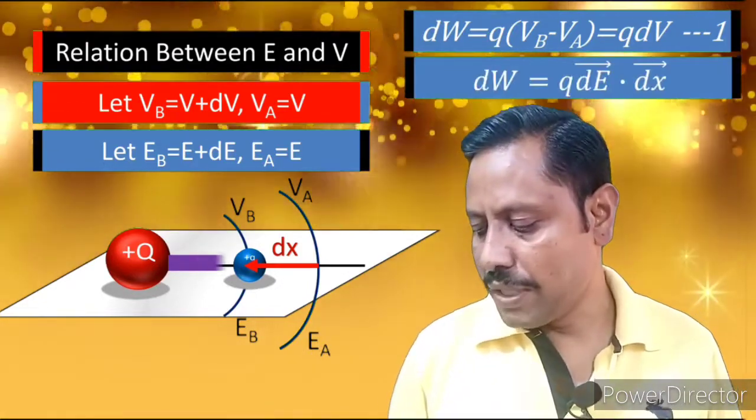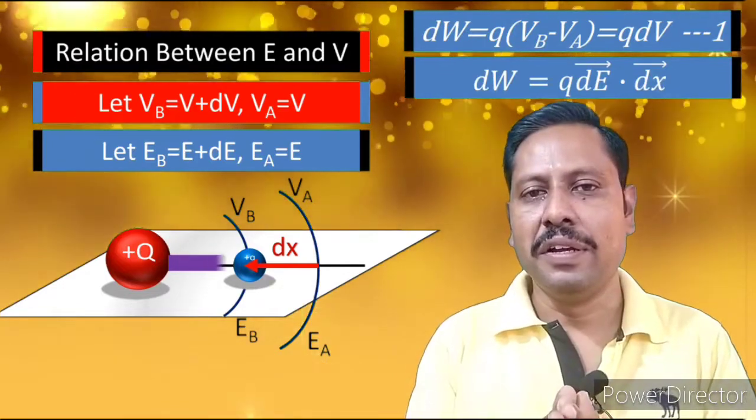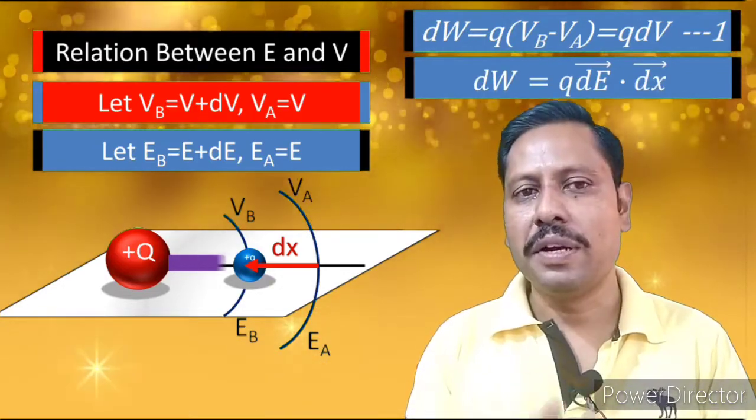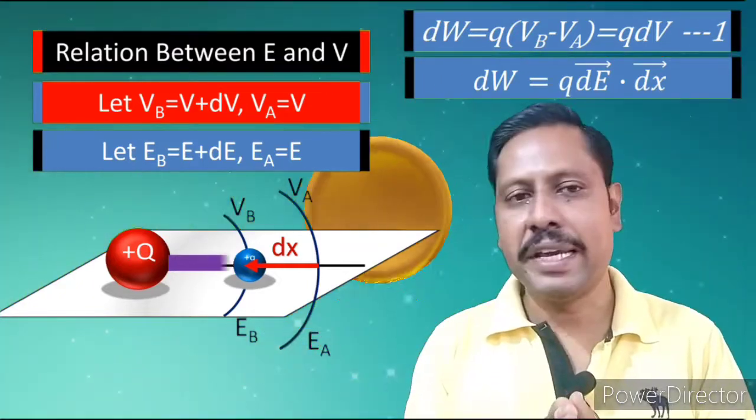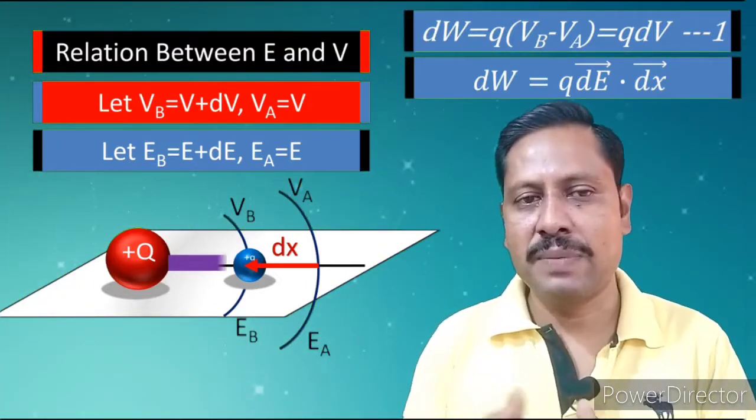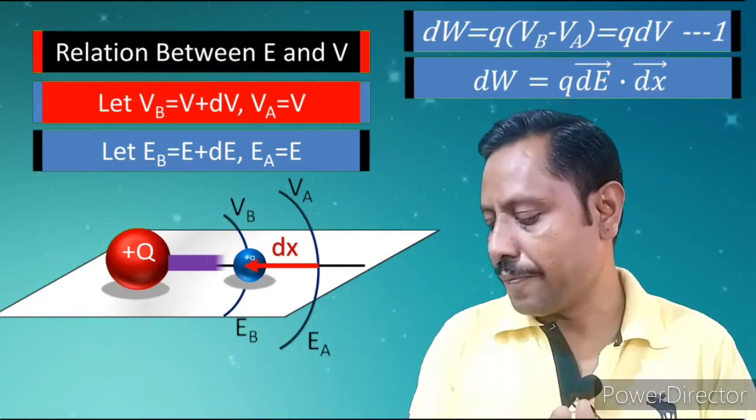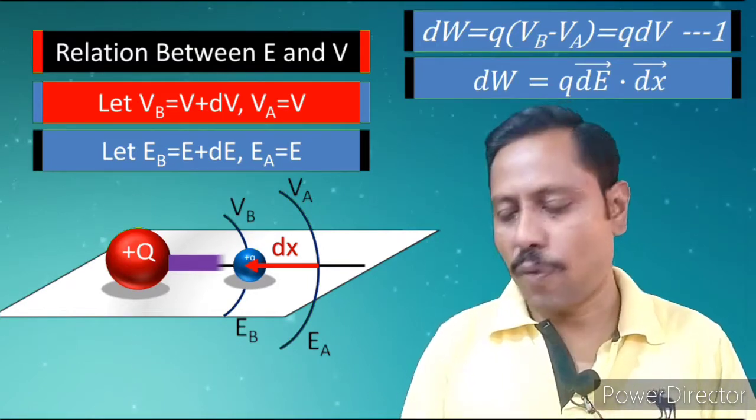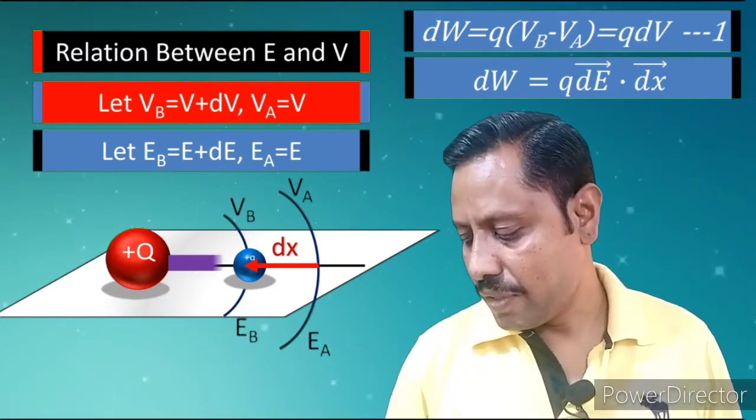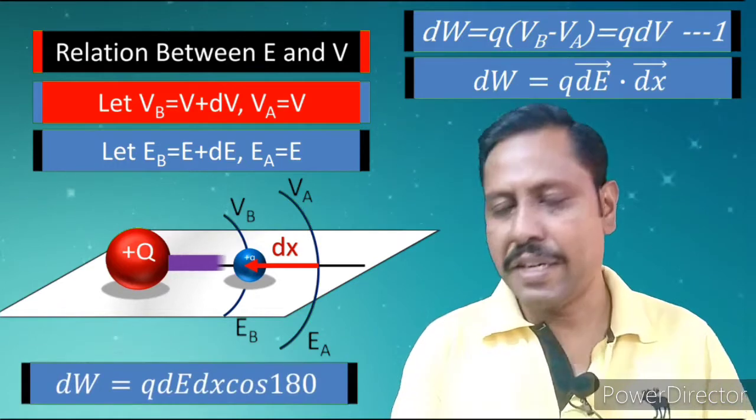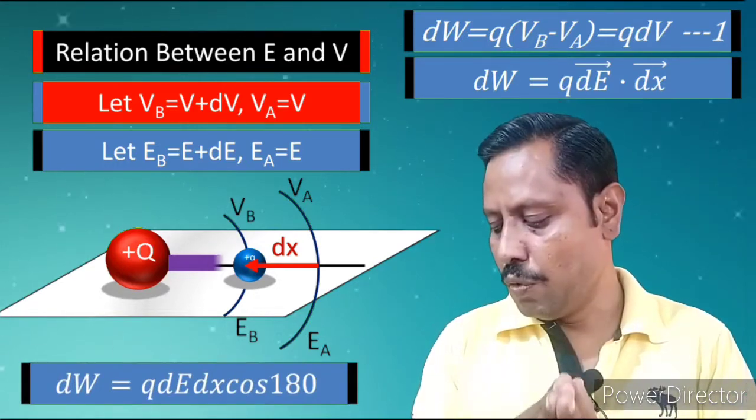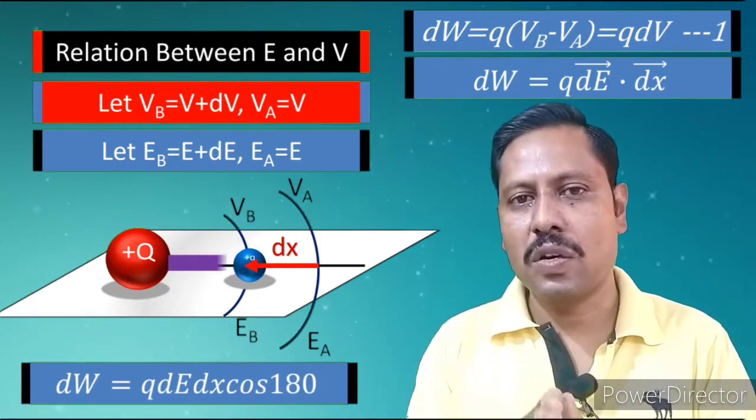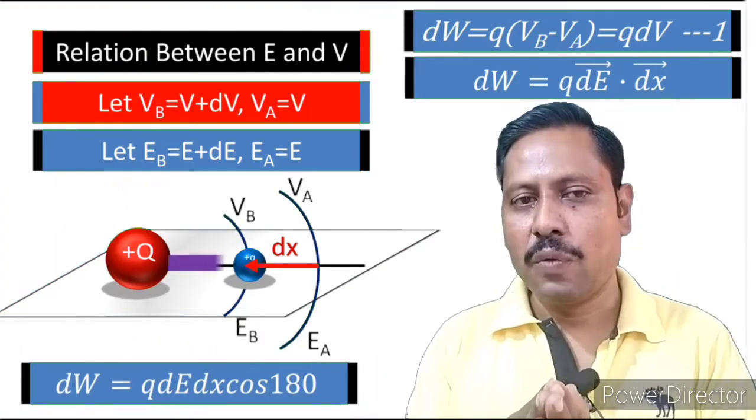Similarly, by using the concept of electric field, we can write DW equal to Q DE dot DX. Let us say we are moving by displacement DX as shown in the figure. As it is a dot product, we can resolve it. So we can write DW equals Q DE DX cos of 180.